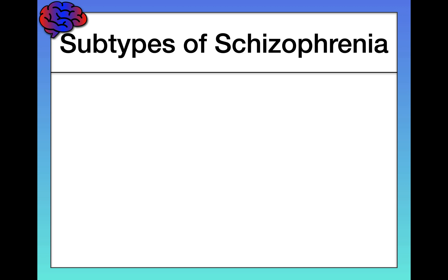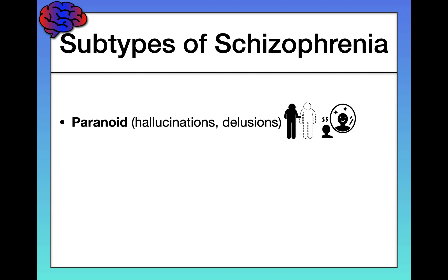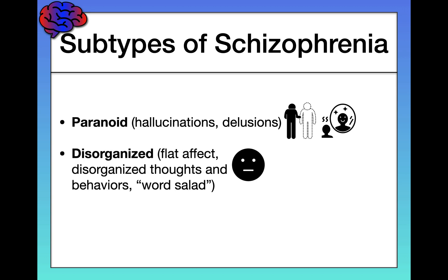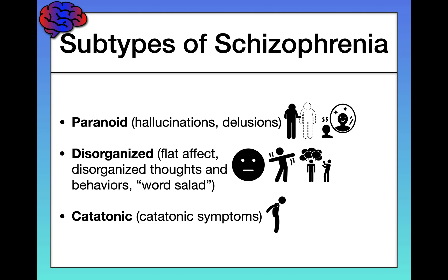Although not in the DSM, some clinicians may refer to different subtypes of schizophrenia based on the types of symptoms the person has. For example, paranoid schizophrenia, where the primary symptoms are hallucinations and delusions. Also, disorganized schizophrenia, where primary symptoms are disorganized thoughts, behaviors, and speech. And catatonic schizophrenia, where you're seeing those catatonic behaviors, which are extremely rare and typically the result of prolonged untreated schizophrenia.